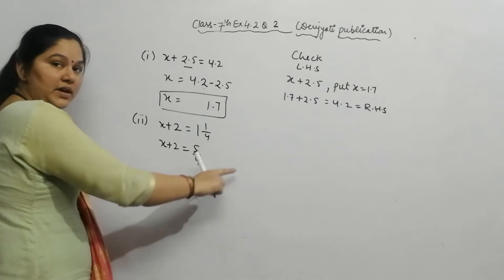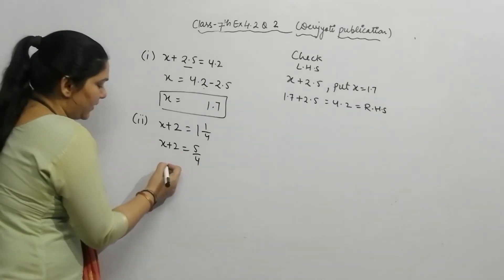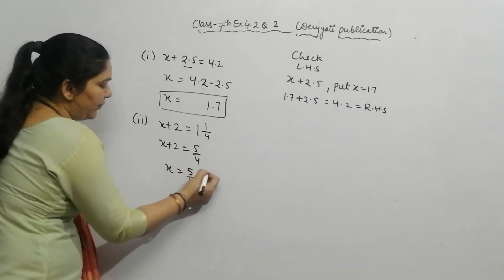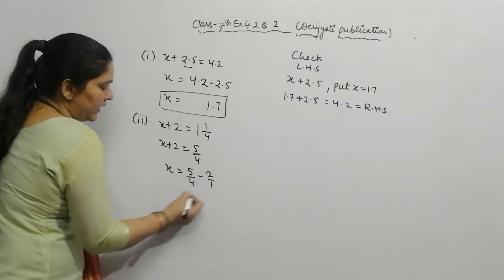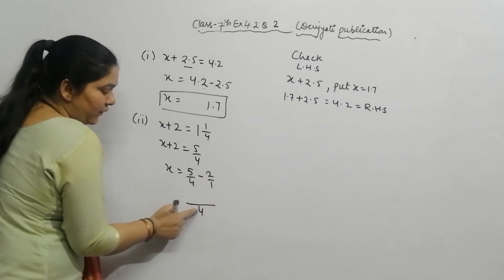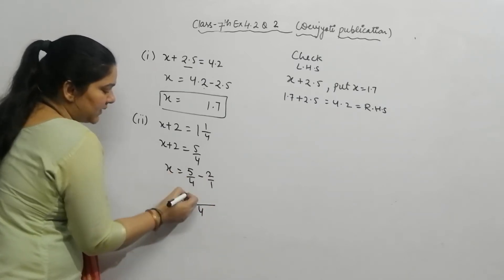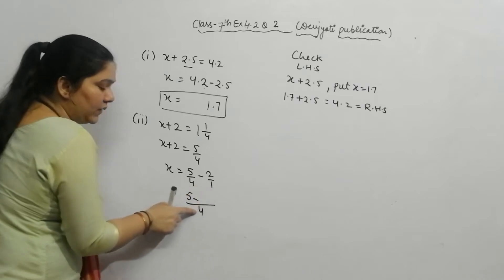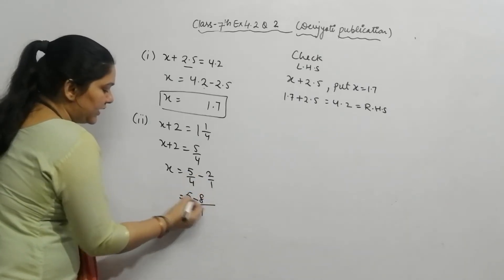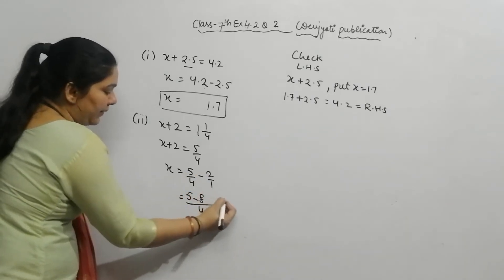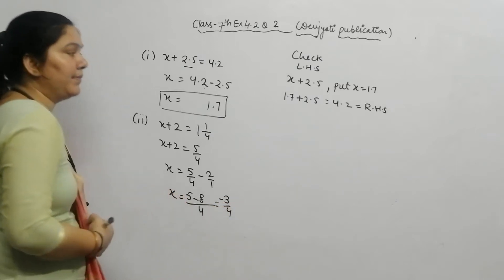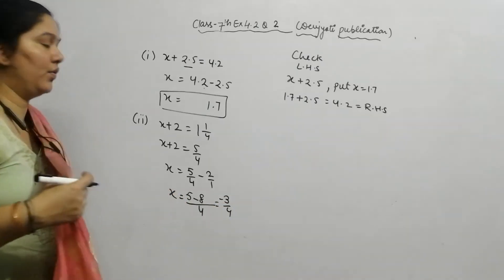Since 2 is in addition, it moves to the right side as subtraction. So x equals 5 by 4 minus 2. LCM is 4: 1 times 5 is 5, minus 4 times 2 is 8. So x equals 5 minus 8 over 4, which gives minus 3 by 4. So the value of x is minus 3 by 4.